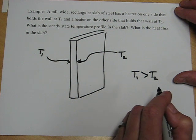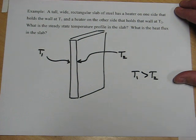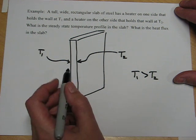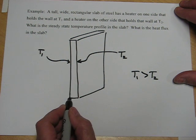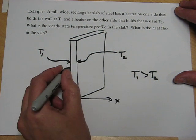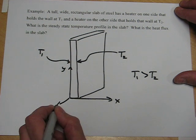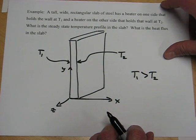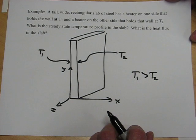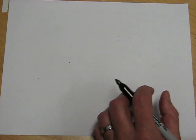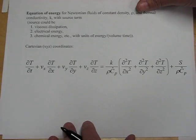So the first step to applying the microscopic energy balance is to choose the coordinate system. And because it's a rectangular slab, a rectangular coordinate system would be a good idea. And I'm going to choose X to be the direction that is through the thickness of the slab. I can choose Y to be the upward direction and Z to be the third direction. With the coordinate system chosen, we now move on to the microscopic energy balance. And I have a zoomed in version here that's easier to see.